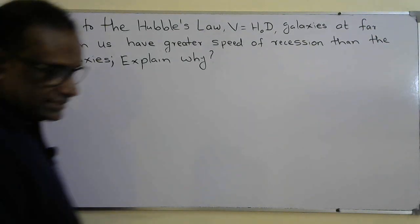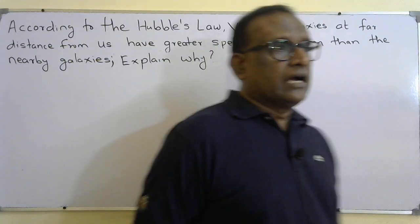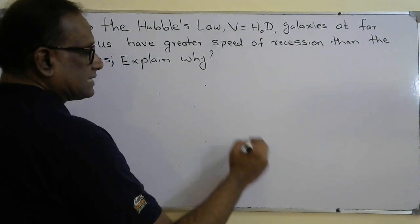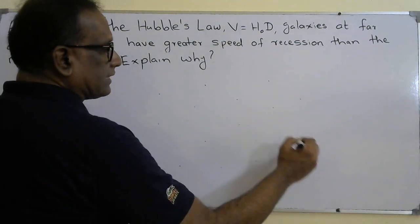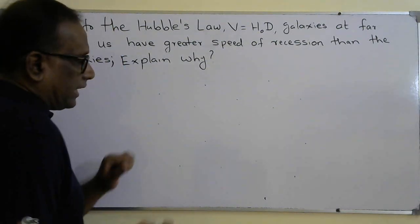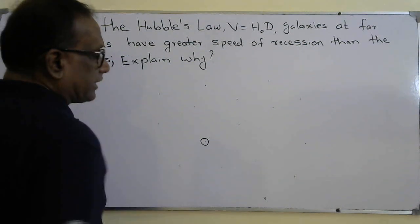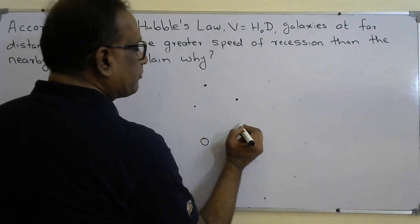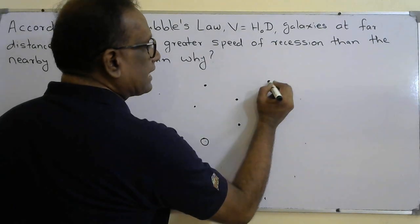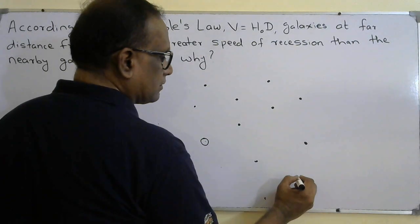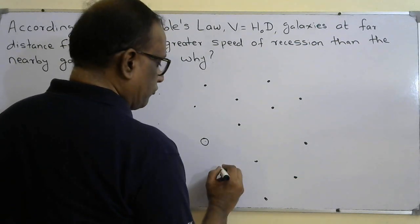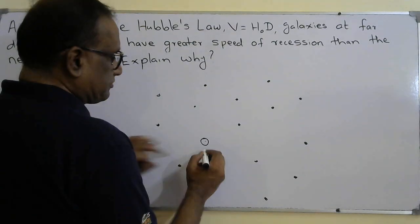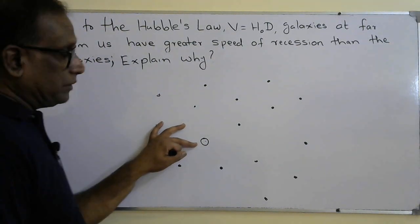Explain why. For example, imagine there are different galaxies in the universe. Our location is here. When we measure the speed of recession of different galaxies, when the distance from us increases, the speed of recession will be more.